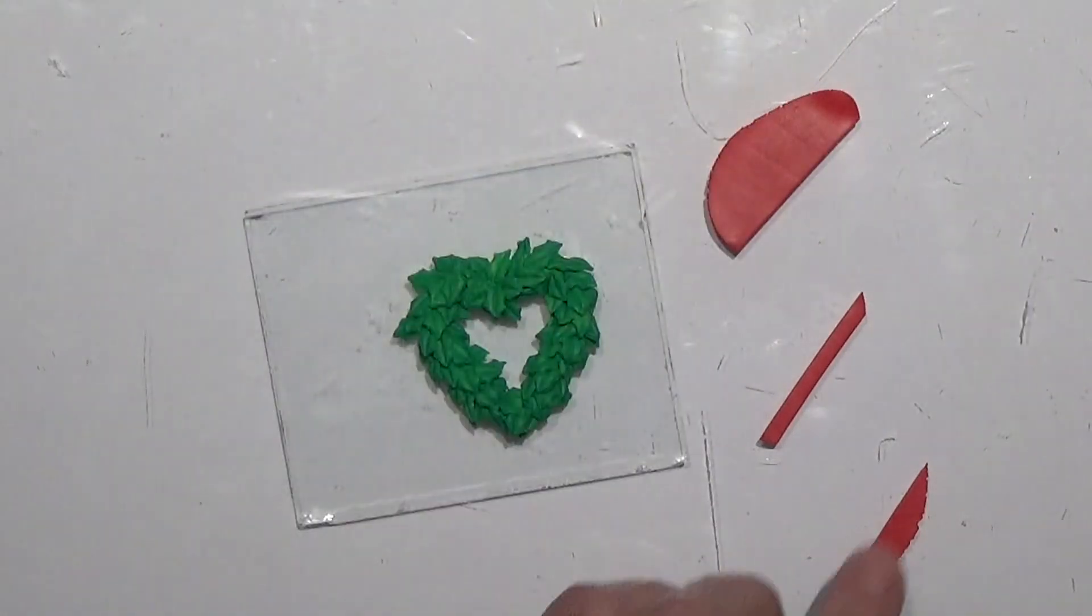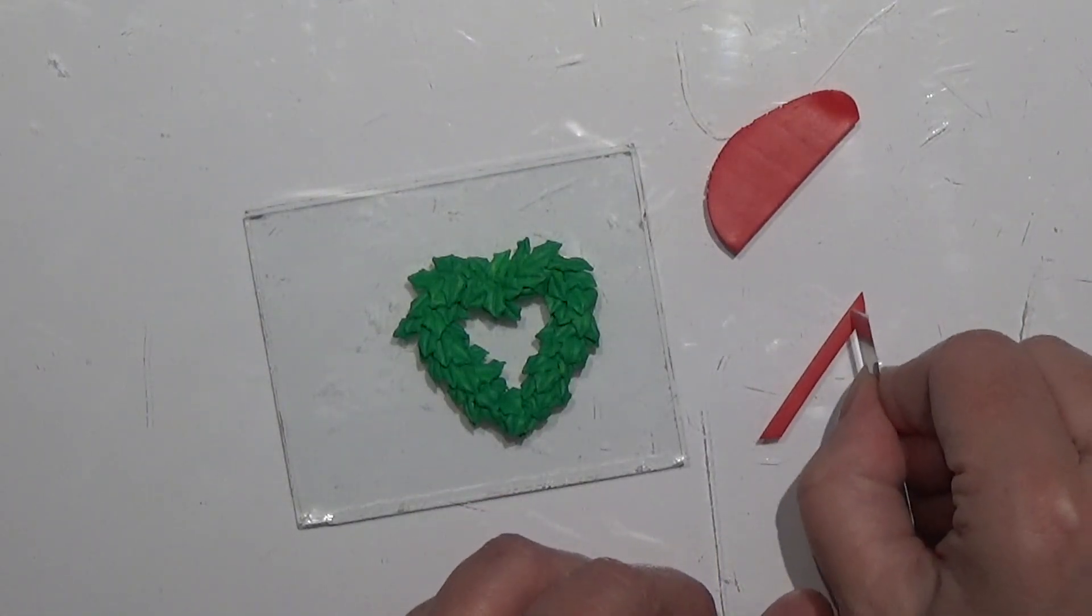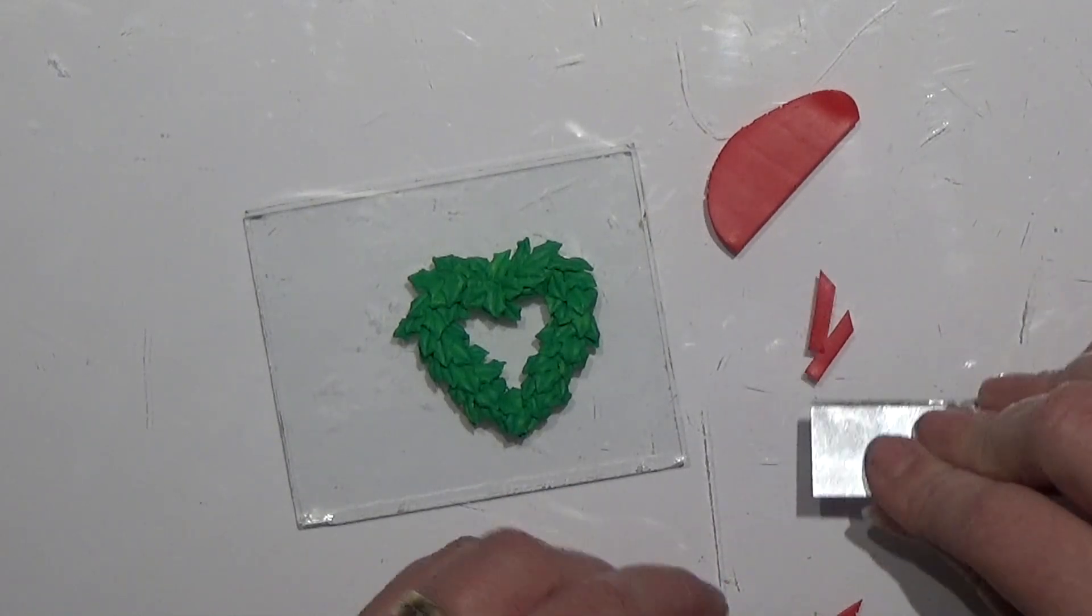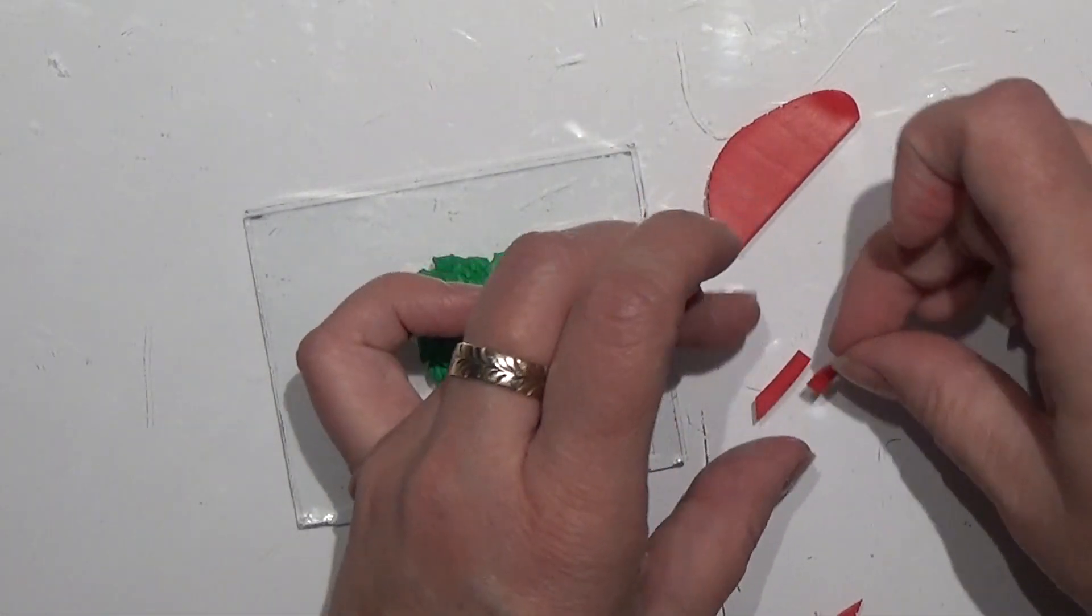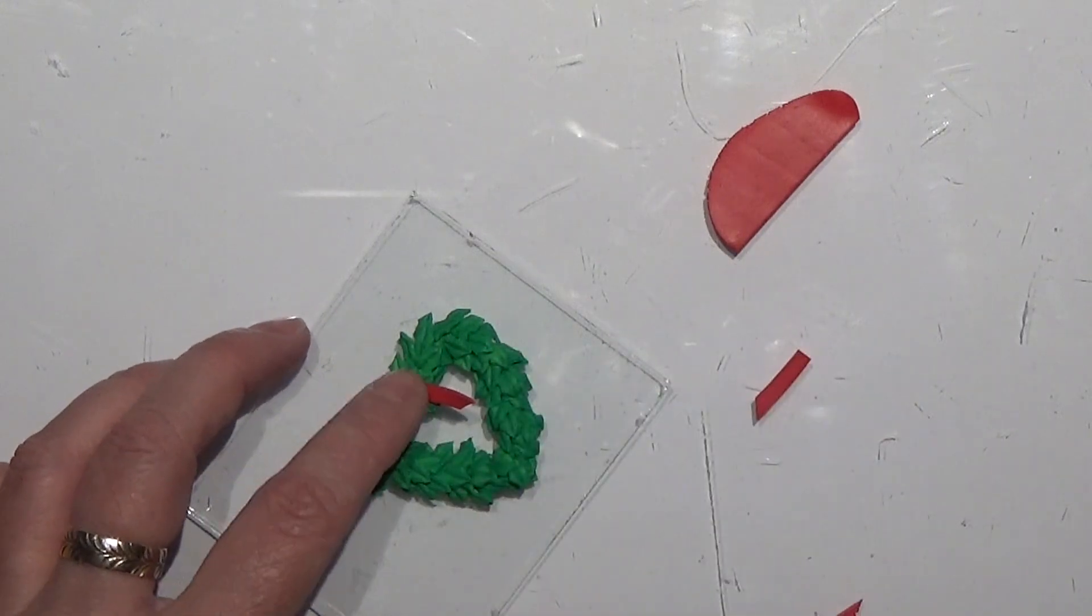Leave that for a second. I'm going to cut the ends off in an angle and making two strips here because I want a bow for this right here.